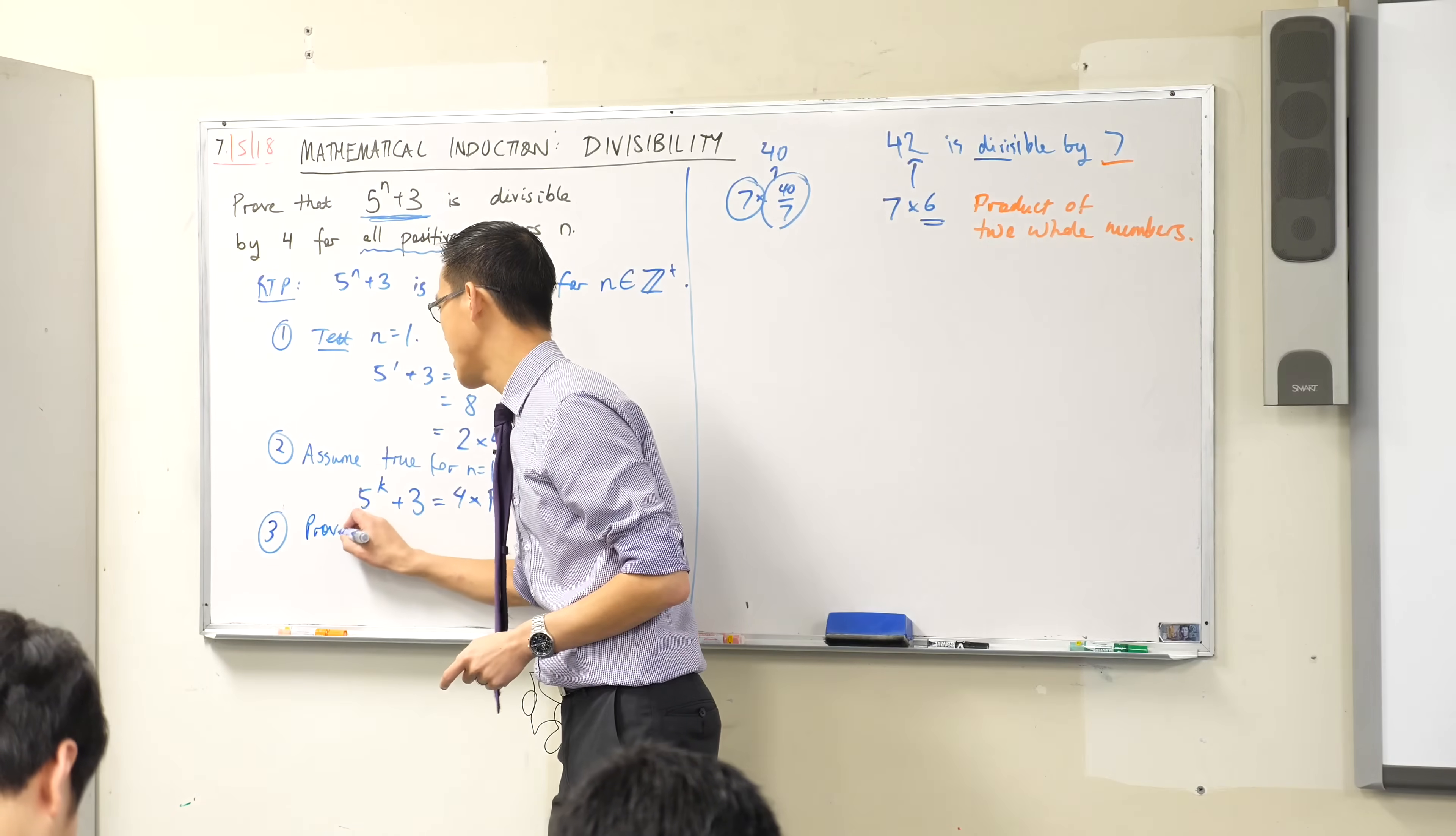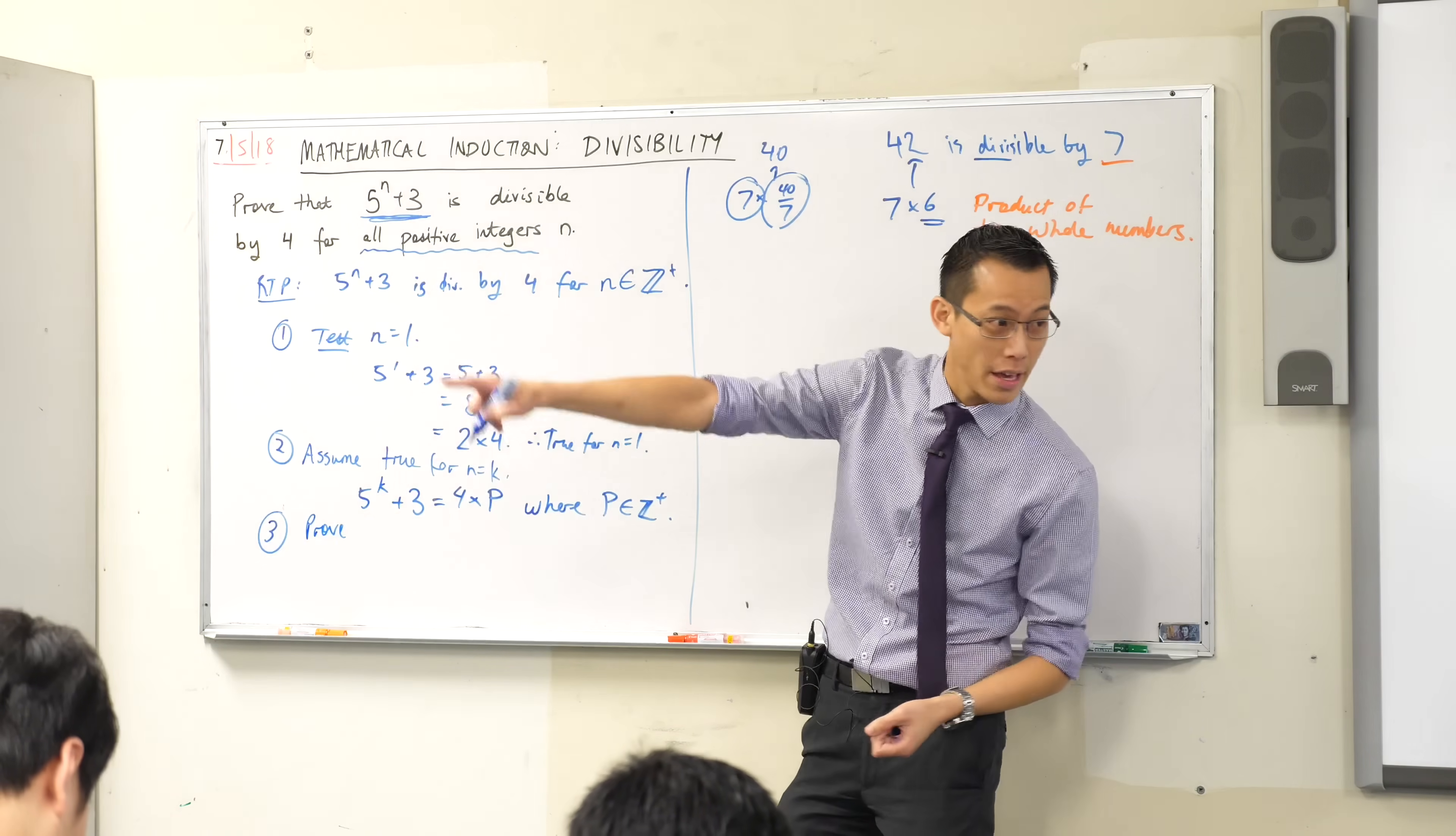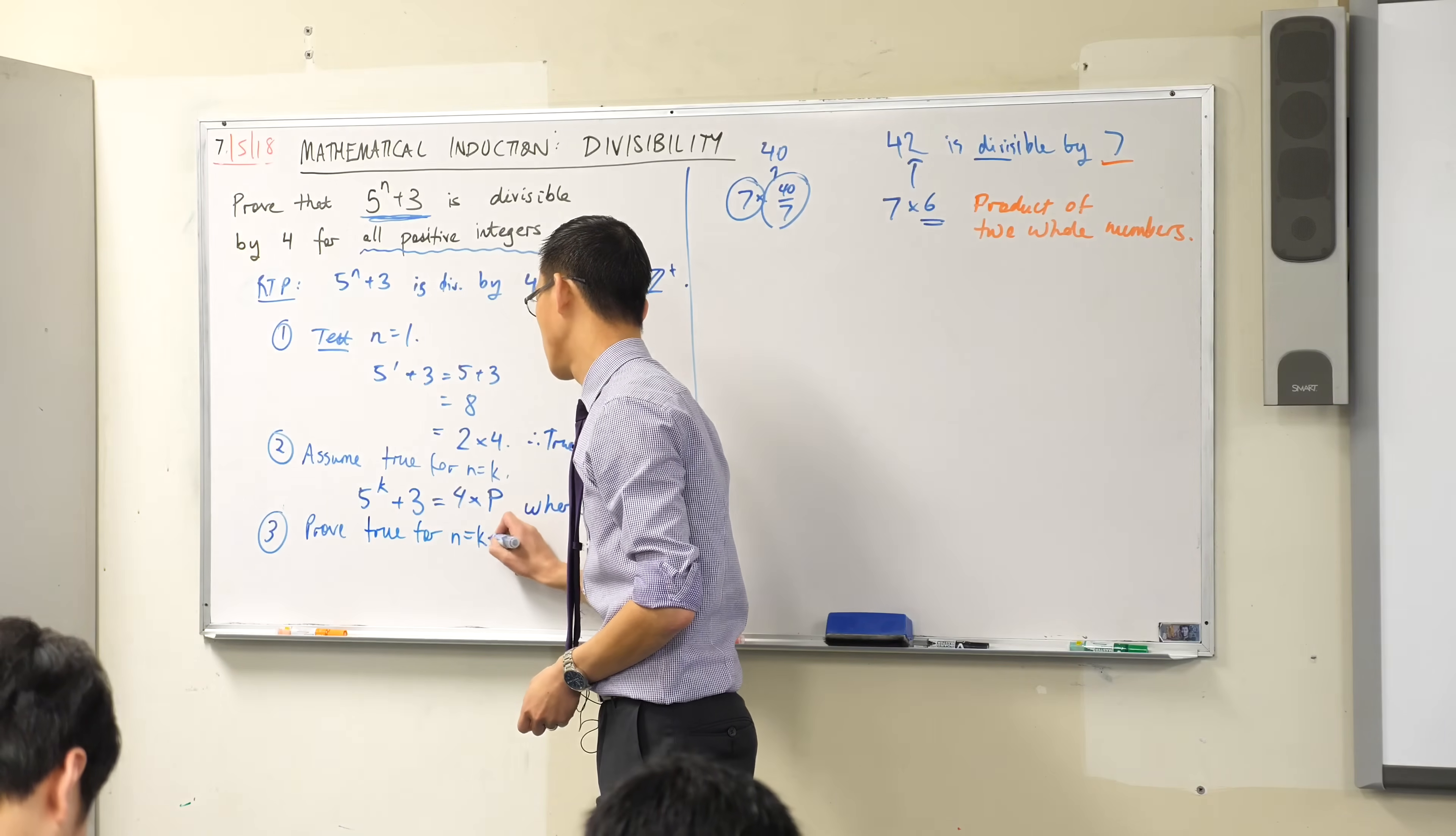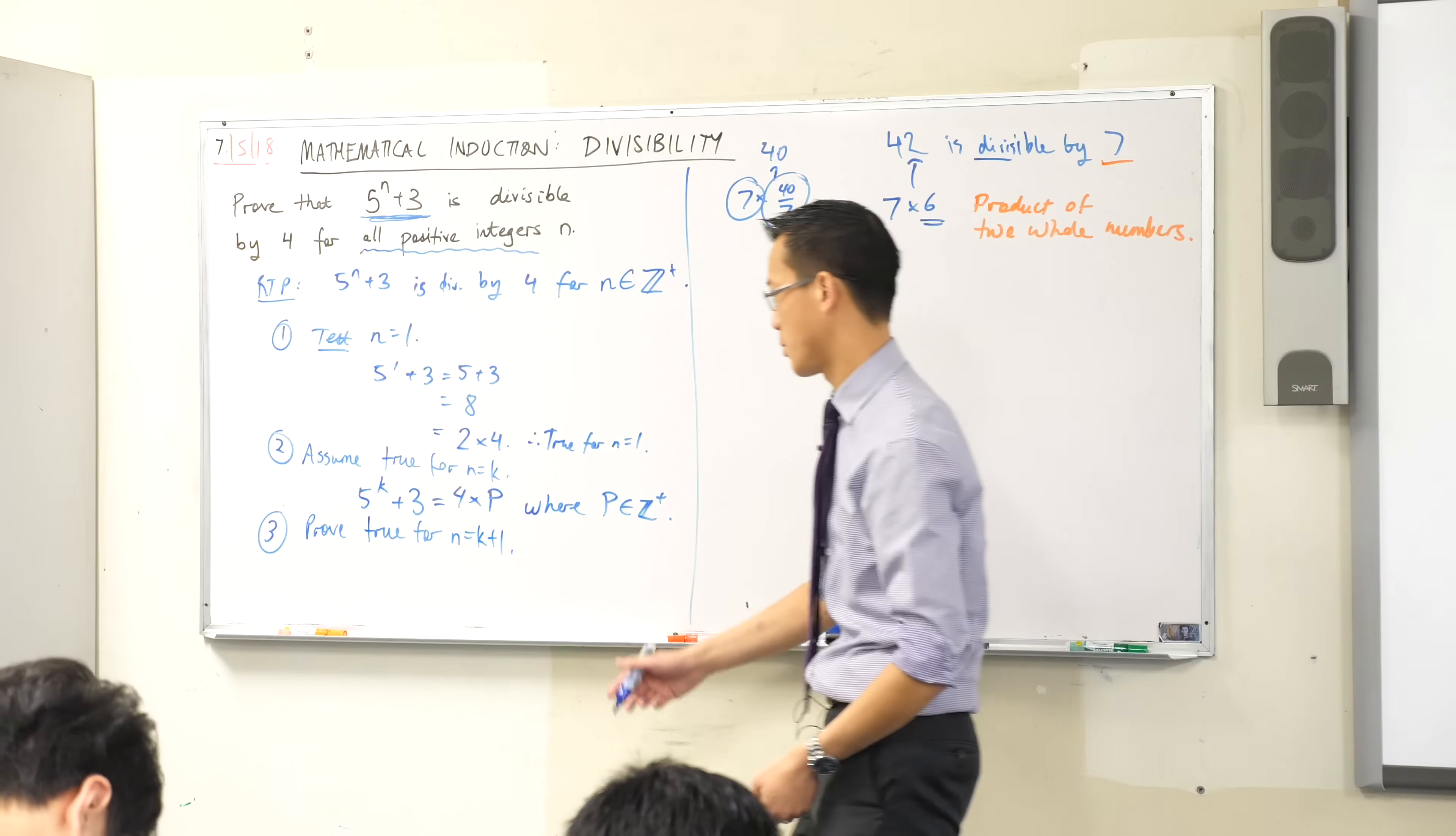Very good. I'm going to now set about proving that the statement, if it's true for this one, will be true for the next value along, which is my k plus 1. So I'm going to prove true for n equals k plus 1. So I'm going to write this equation again, but for the next one over instead of for this one.